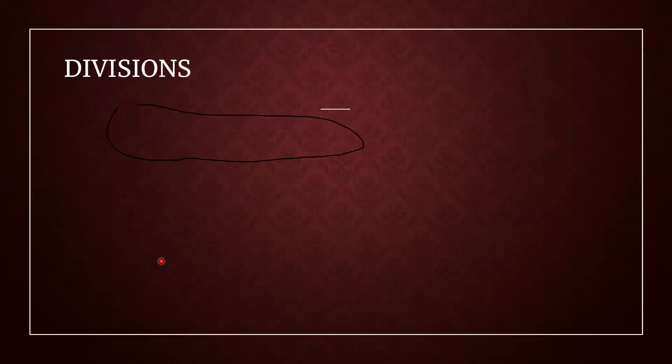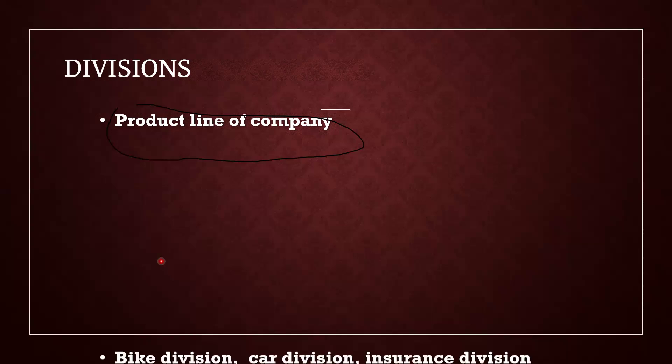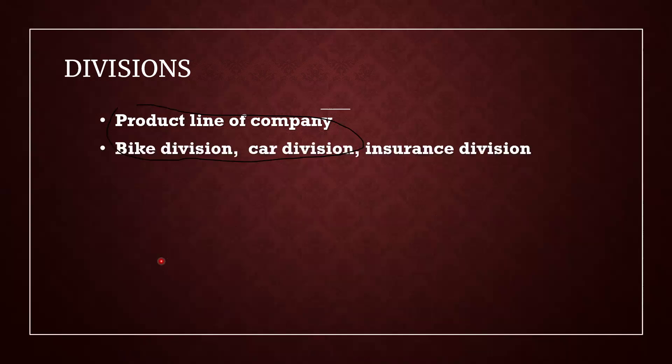Next, Division — it is a product line of the company. For example, Maruti will have a car division, insurance division, spare parts division, and electrical accessories division. All those are divisions.